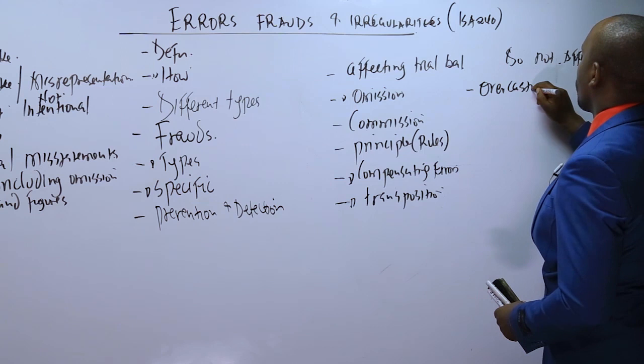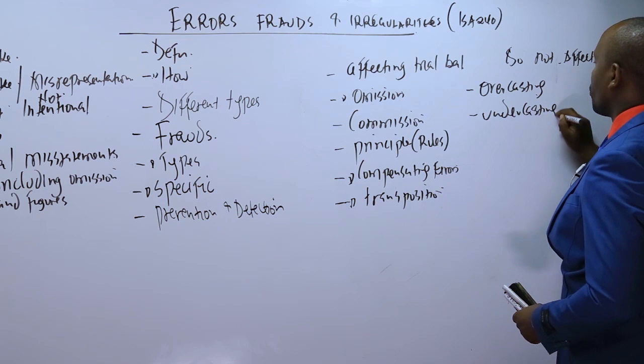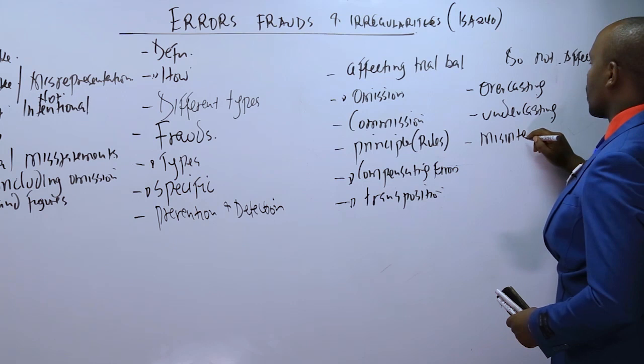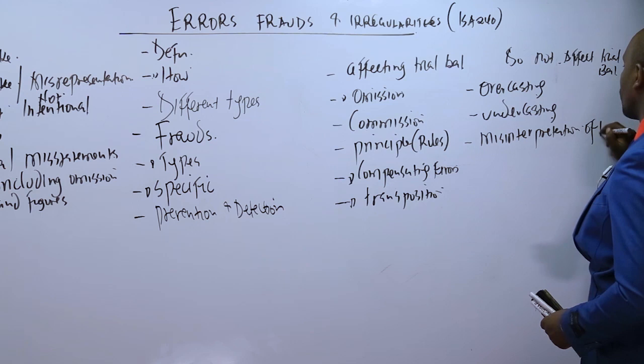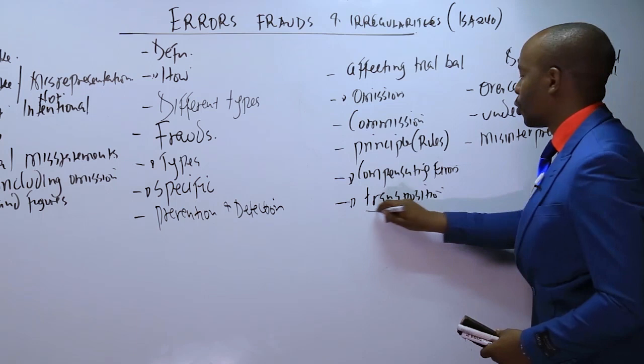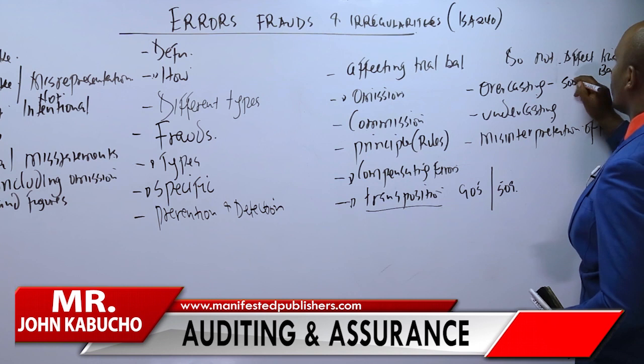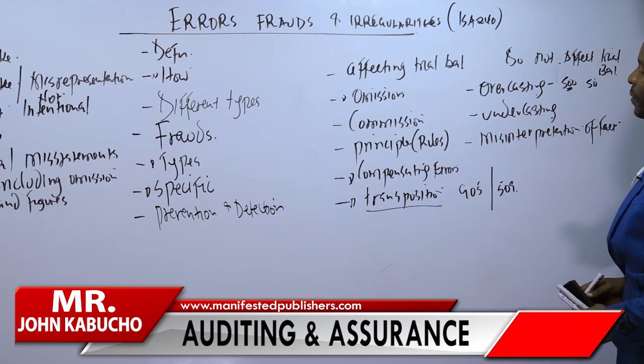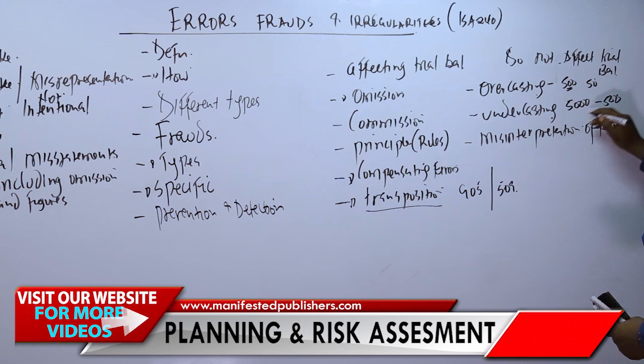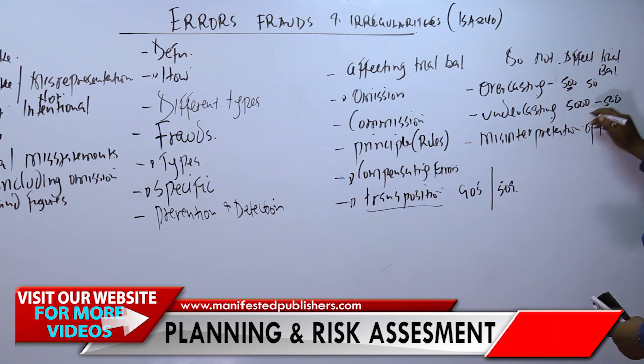There is also the transposition error — for example, recording 509 instead of 905. There are overcasting and undercasting errors: if you record a figure as 500 instead of 50, you are overstating that figure; if you record 500 instead of 5,000, you are undercasting — recording a figure lower than it should be. Finally, there is misinterpretation of facts, where facts in the financial statement are misread or misunderstood.